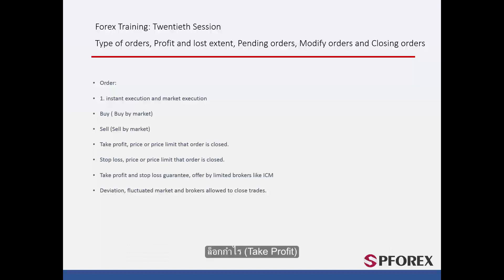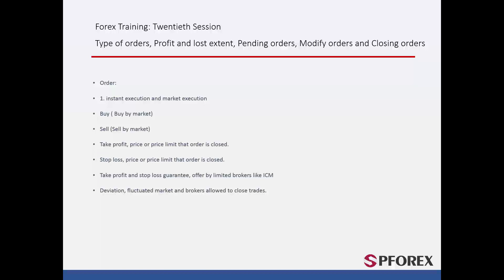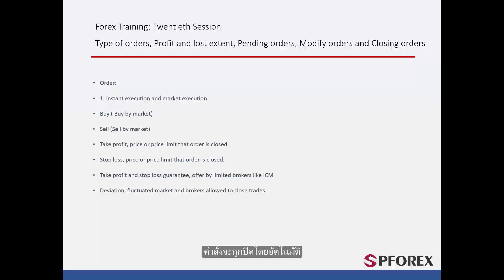Take Profit, abbreviated to TP, is a limit you set on an order which you accept if the market price meets your target price. Essentially, if the price meets your take profit limit, then the order will be closed automatically.